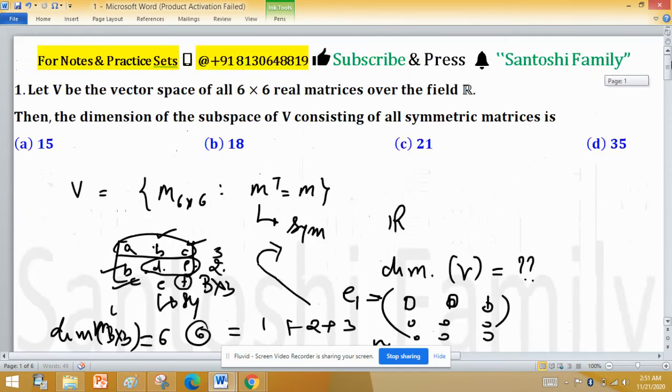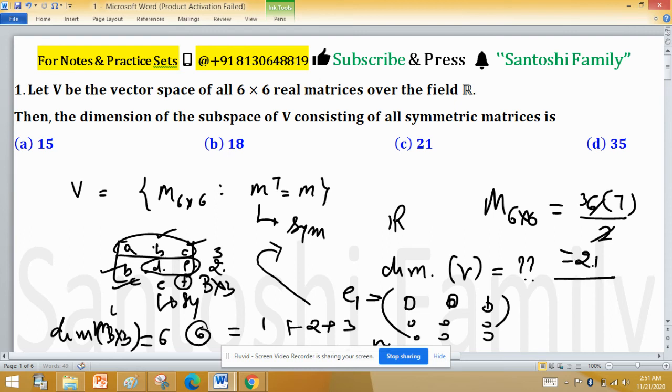Here, matrix M is 6 by 6, so 6 times (6 plus 1), which is 7, divided by 2. I only put in the value of n and we will get 3 times 7, which is 21. 21 is the dimension of this vector space, so this is asked about only symmetric matrices.